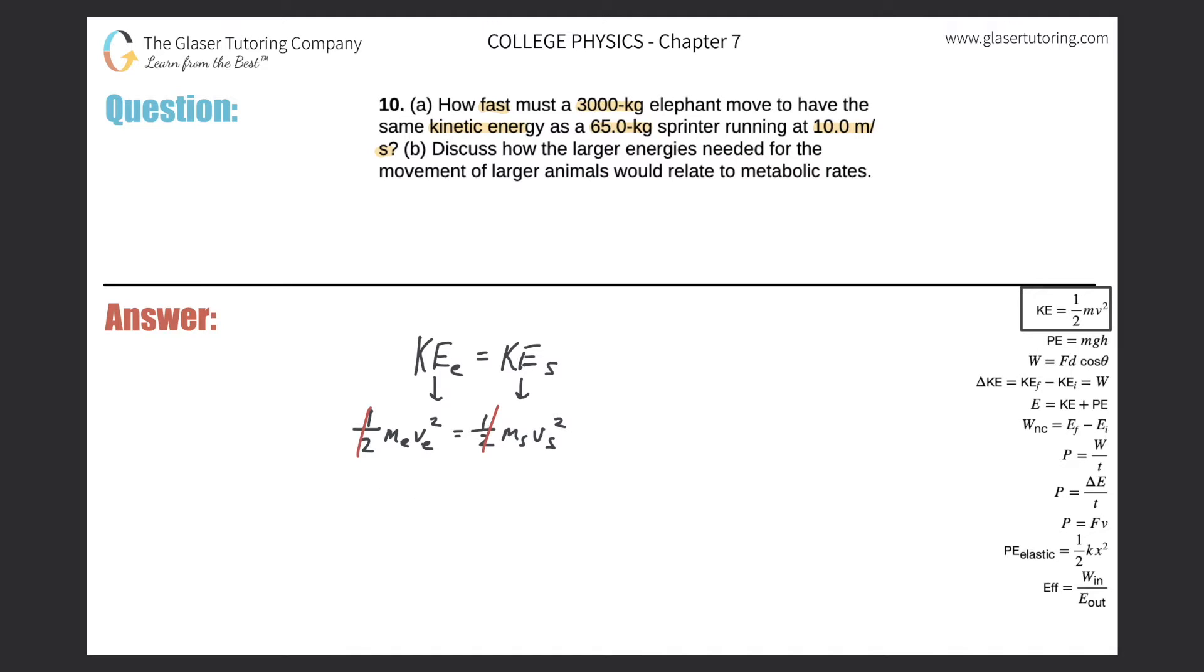Let me just solve this for the velocity first instead of plugging in the numbers. So the mass of the elephant divided on out. So we get then the velocity of the elephant squared should equal the mass of the sprinter times the velocity of the sprinter squared, all divided by the mass of the elephant.